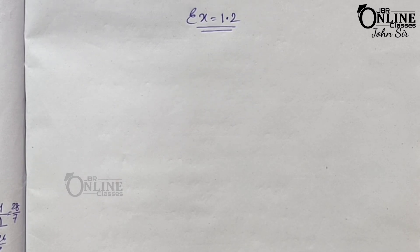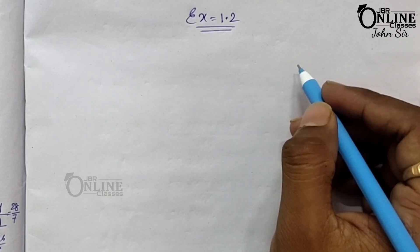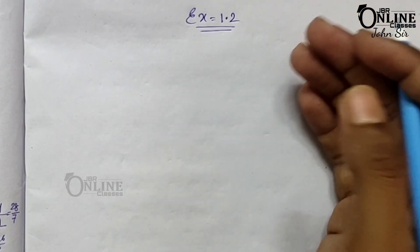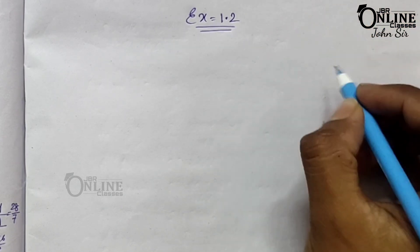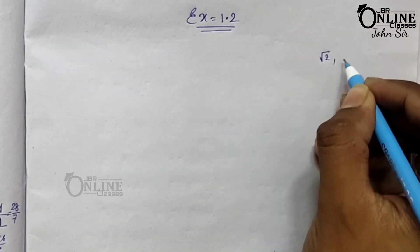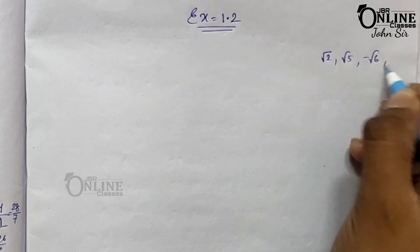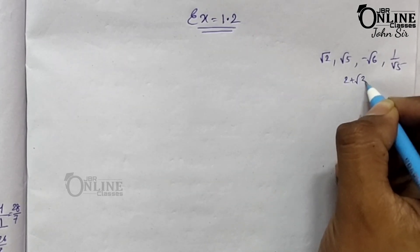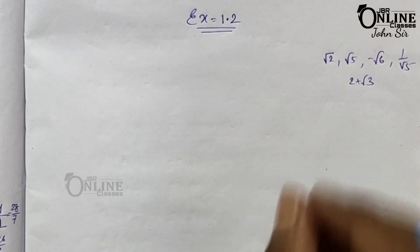So what is an irrational number? What is a rational number? A rational number is one that can be expressed in p by q form. So a number which cannot be expressed in p by q form is called an irrational number. Some examples are √2, √5, −√6, 1/√5, or 2+√3. These are some examples of irrational numbers.